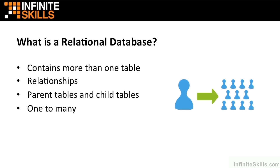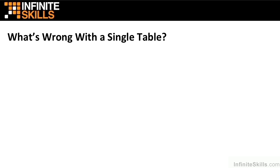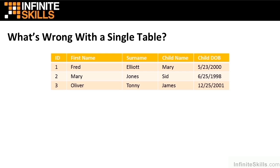But why do we even need multiple tables? Let's take a working example. What's wrong with just having a single table, just using a big spreadsheet? If we take the example of children and their parents, we have a flat table — could be an Excel spreadsheet — where we have an ID for each person, a first name, a surname, a child's name, and the child's date of birth.